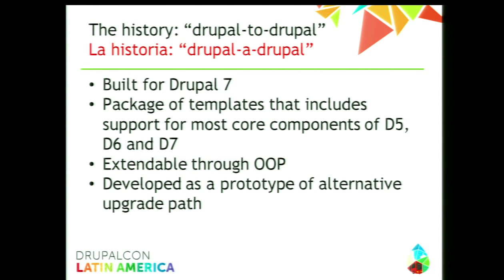In Drupal 7, there was a package called Migrate Drupal to Drupal, and this was a set of templates for bringing data from Drupal 5, Drupal 6, and Drupal 7 into Drupal 7. It was originally done as a proof of concept for maybe doing a new migration path, and it's now been declared the new standard. So that old upgrade.php page is gone. It used to work that you would drop your D7 site on top of D6 and run upgrade.php.